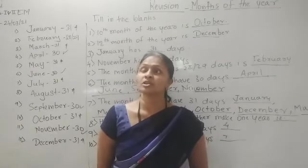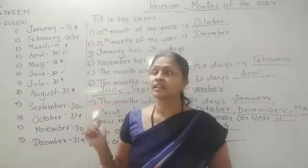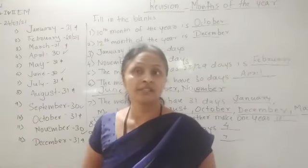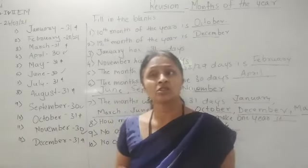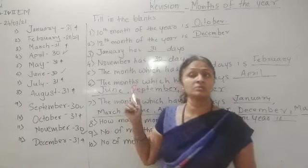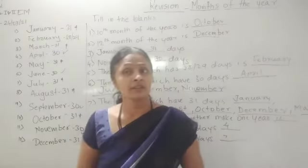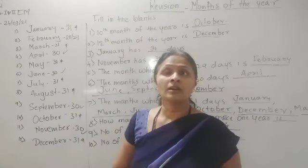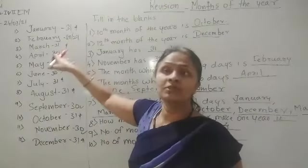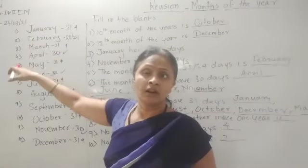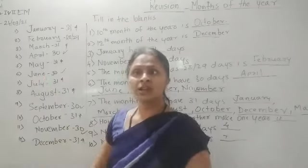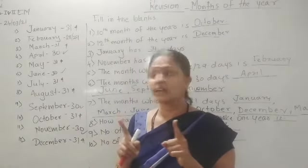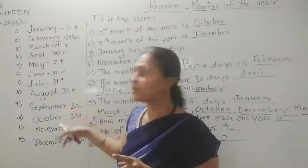Today we have seen one type of question which is related to months of the year — either fill in the blanks or direct questions. They may ask: how many months are there in one year? Twelve. How many months are having 30 days? Four months. Like this, direct questions may also be asked. Other question types: which is the ninth month of the year? Which is the fifth month of the year? Which month will come after May? That is June. Before, after, and in-between type of questions may also be asked. For example: which month is there in between September and November? That is October.